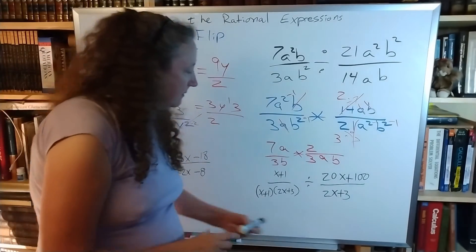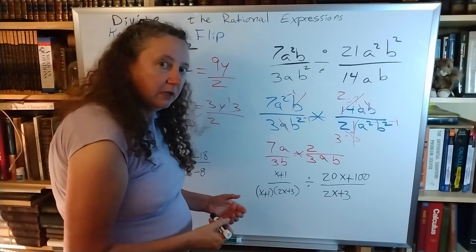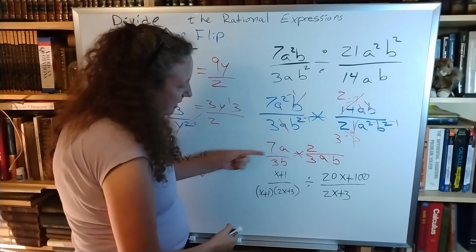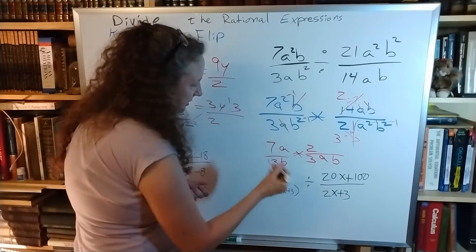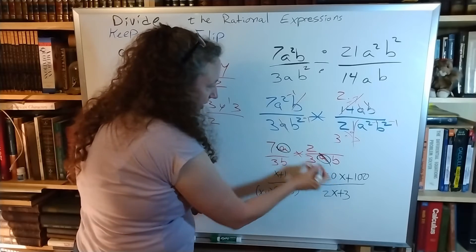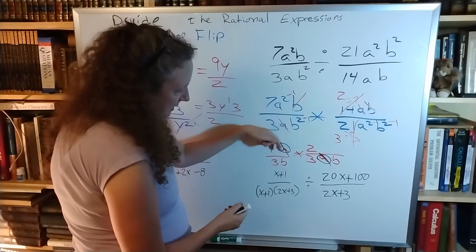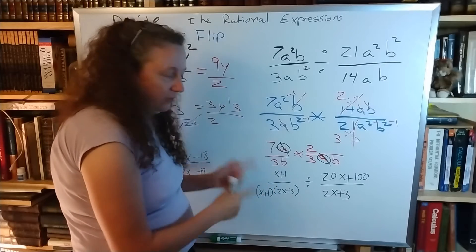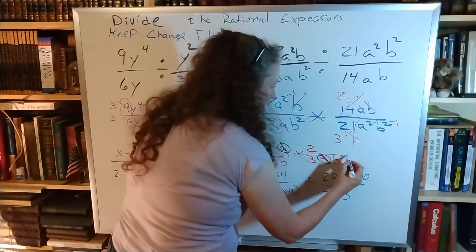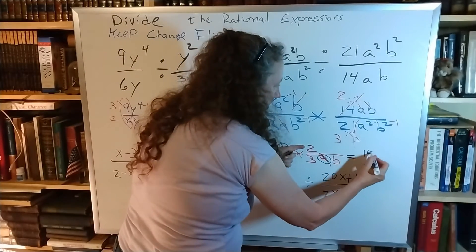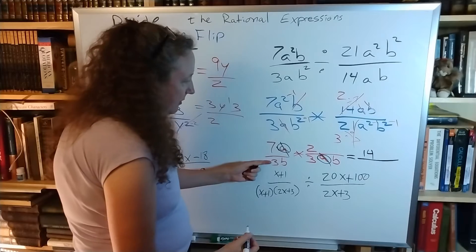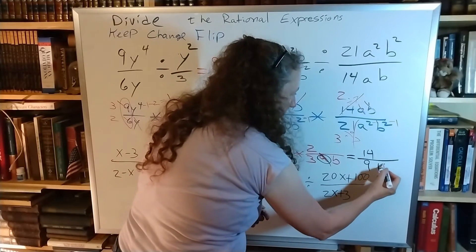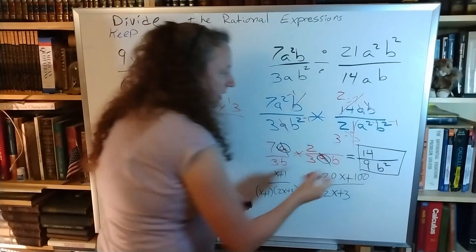Almost done but not quite. Is there anything else I can cancel? 7 and 3 — nope. 2 and 3 — nope. a and a — yes! So that a and that a go away. The only letters left are on the same side of the fraction bar so they have to stay. Now I multiply: 7 times 2 is 14 on top, 3 times 3 is 9 on the bottom, b times b is b squared. And there is that answer: 14 over 9b squared.